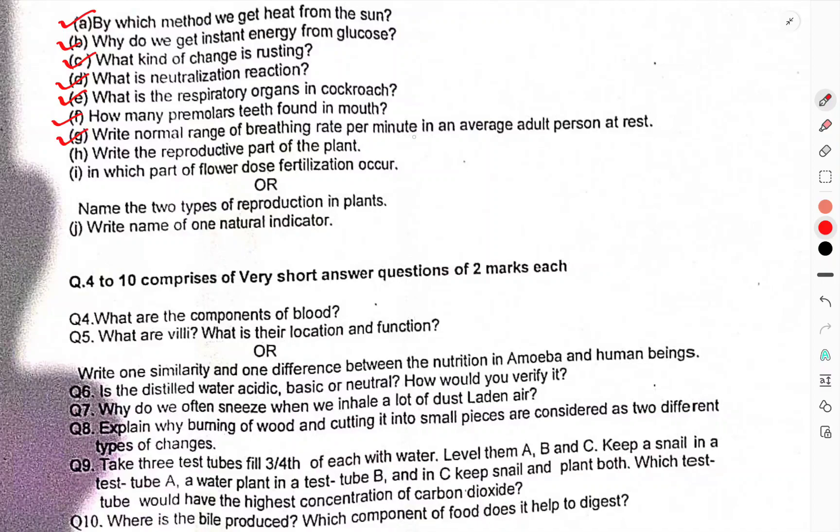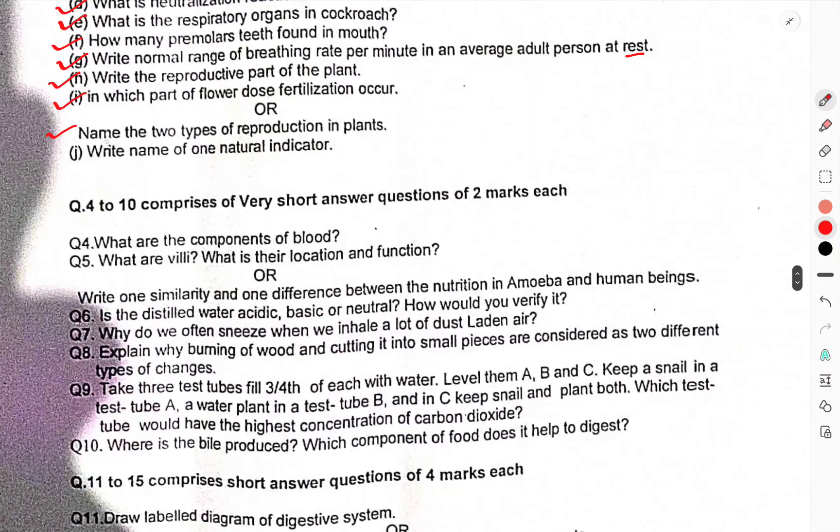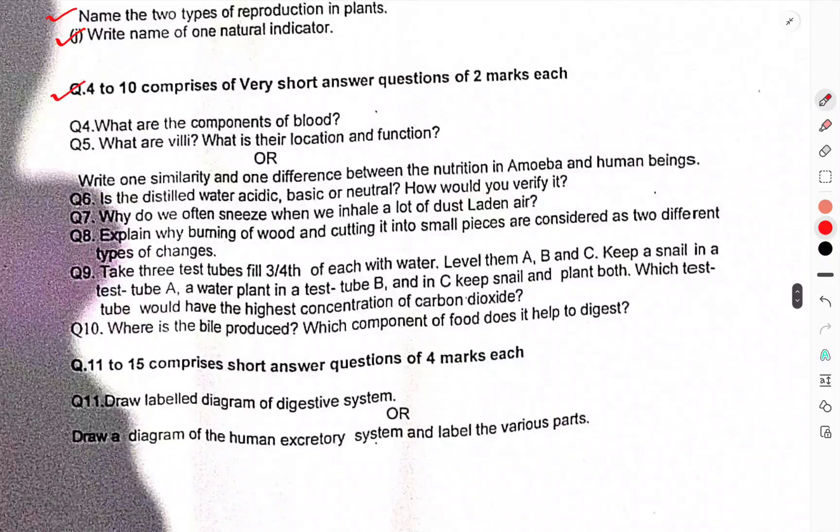What is neutralization reaction? What is the respiratory organ in cockroach? How many premolar teeth are found in the mouth? Write the normal range of breathing rate per minute in an average adult person at rest. Write the reproductive part of the plant. In which part of the flower does fertilization occur? Name the two types of reproduction in plants. Write the name of one natural indicator.